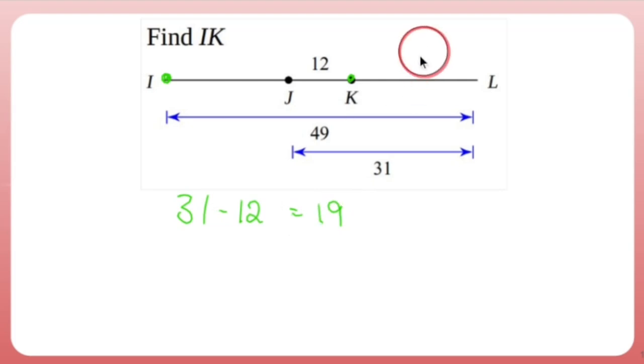Okay, so let's get rid of that question mark. Now, you might be thinking that's not going to help me because I need IK not KL. I know, but I'm working towards something here. What I also know is IL, the whole thing, is 49. I know that JK and KL add up to make 31. So if I wanted to find out what IJ was, I could do 49 minus 31, which is 18.